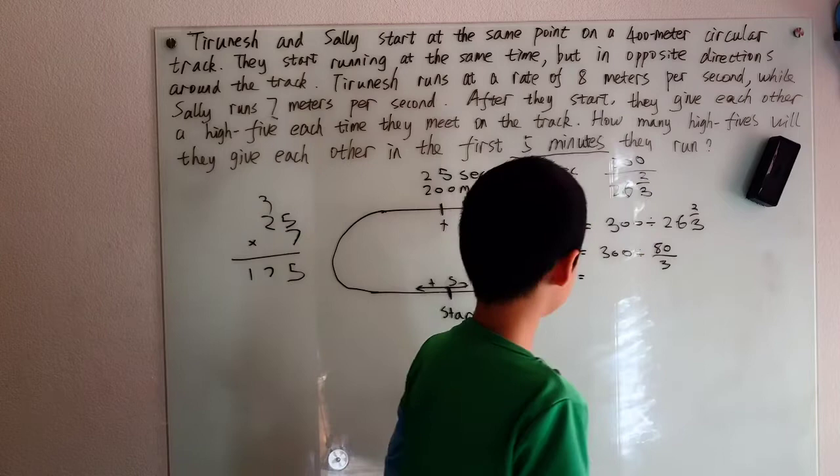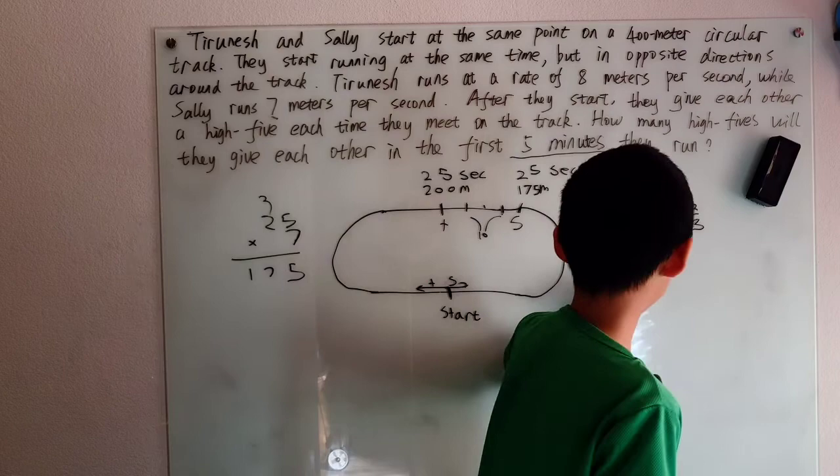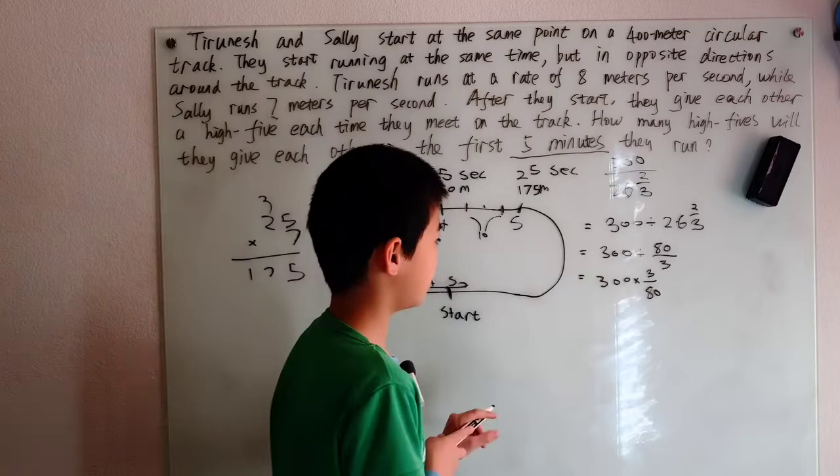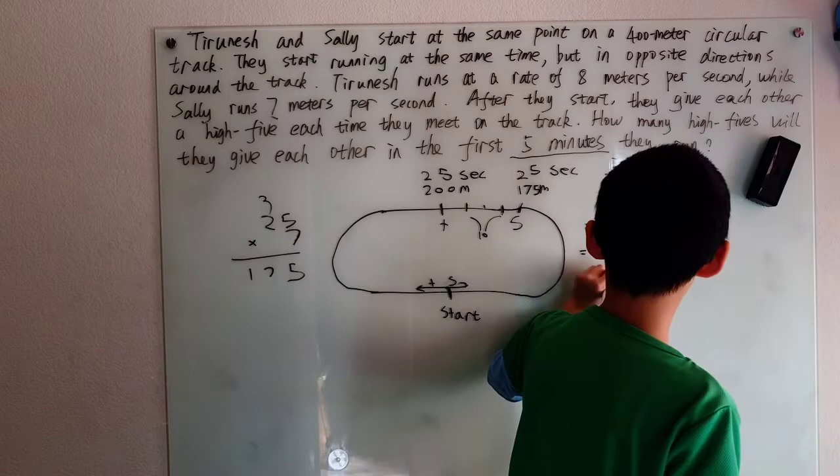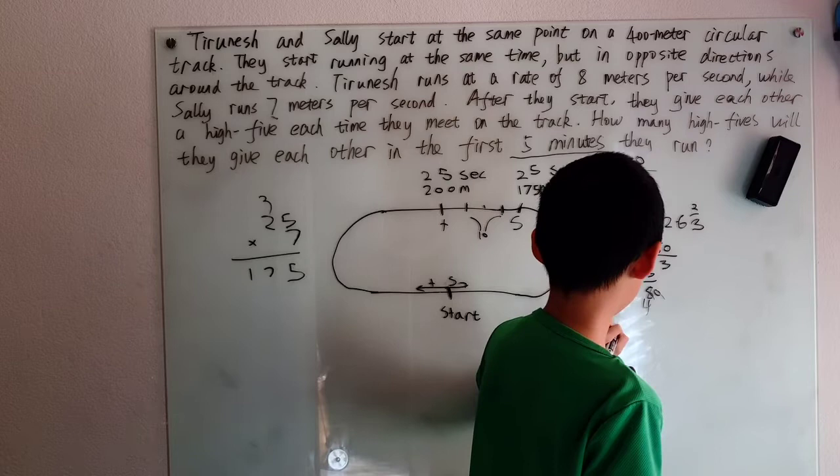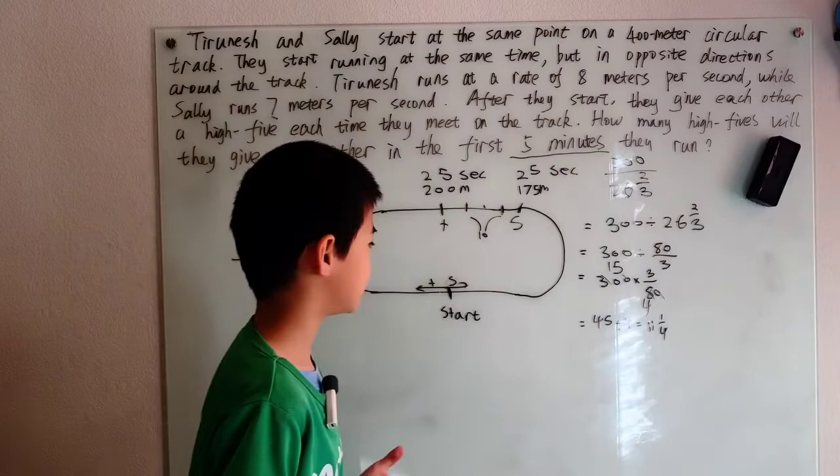And division is just multiplication by the reciprocal. So that's 300 times 3 over 80. And cancel the zeros. 8 and 30 can divide by a factor of 2. And we get 45 divided by 4, which is 11 and a quarter, to be exact.